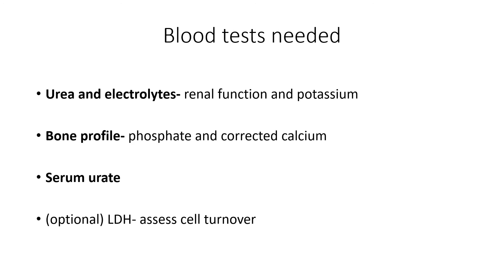The blood tests you need: urea and electrolytes to check renal function and potassium; bone profile to check phosphate and corrected calcium; serum urate; and optionally LDH or lactate dehydrogenase, which is a vague marker of cell turnover. If LDH is very high, that suggests tumour lysis is more likely, though it's not essential.